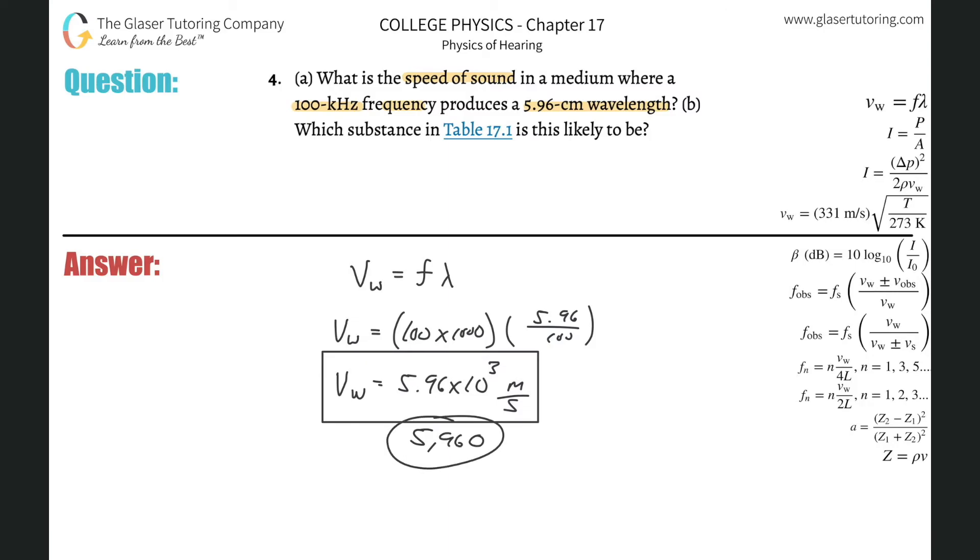So now part B is asking which substance in this particular table is it likely to be? So if you go look at that table and take a look at the speed, you're going to realize that it is going to basically correlate with steel. So the substance that we're talking about is steel.